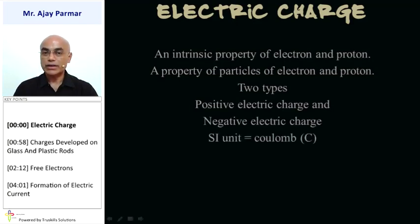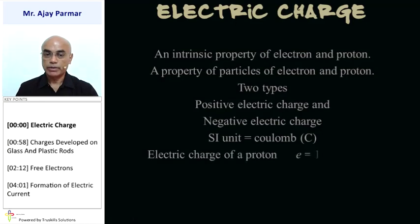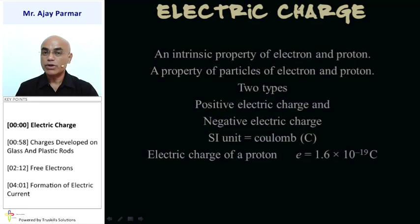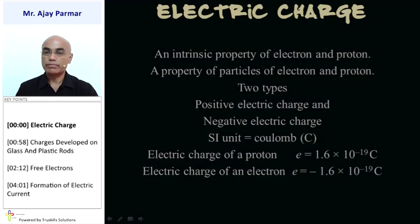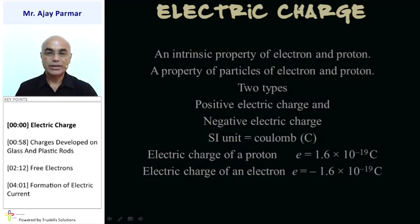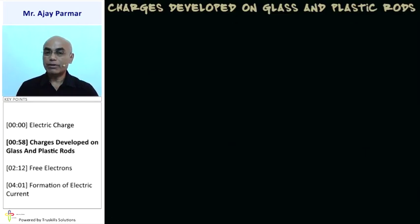The SI unit, that is the standard international unit of electric charge, is the Coulomb, named after the scientist Coulomb. The electric charge of a proton is taken as E = 1.6 × 10⁻¹⁹ Coulomb, whereas that of an electron has the same magnitude but with a minus sign: −1.6 × 10⁻¹⁹ Coulomb.